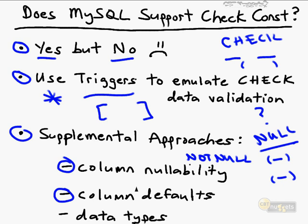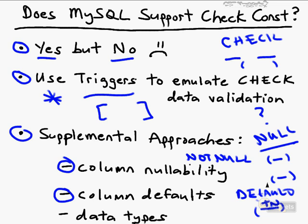Another supplemental approach is column defaults. During CREATE TABLE or ALTER TABLE, you can add the DEFAULT keyword followed by a value that is automatically inserted into that column for every new row. Defaults are useful when most rows will share the same value — for instance, if over 90% of employees live in Tennessee, set DEFAULT 'TN' on the state field and let data entry operators skip it unless an employee lives elsewhere.